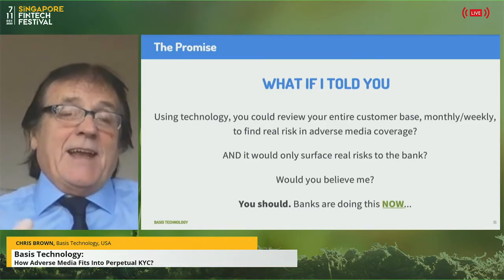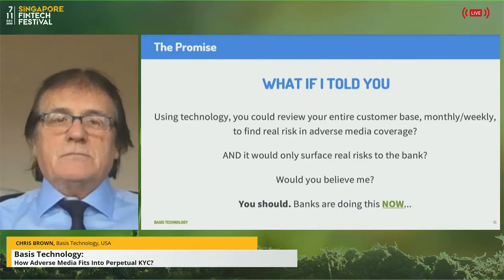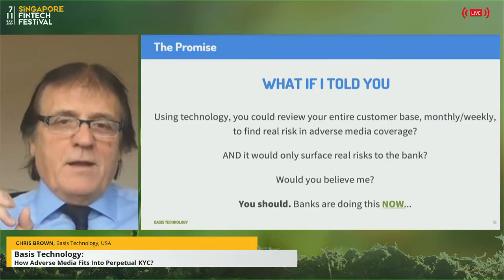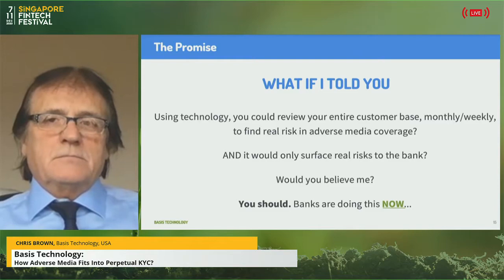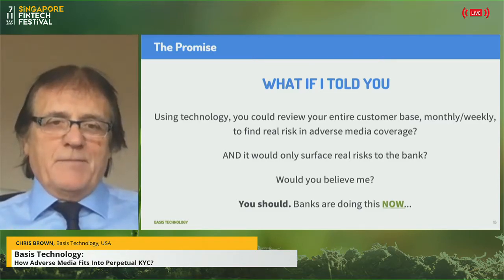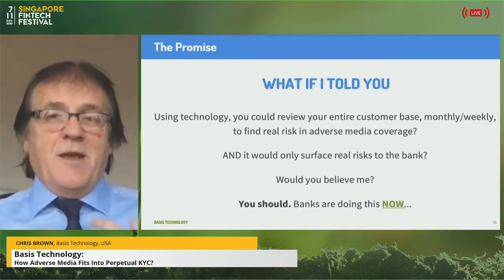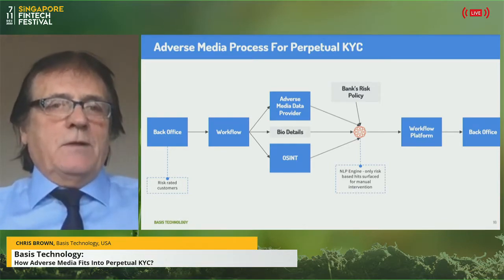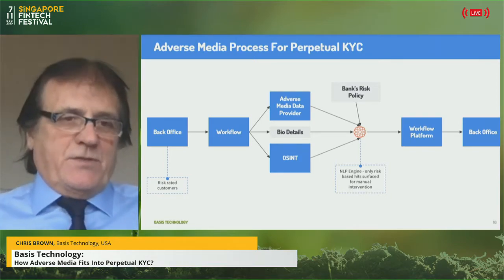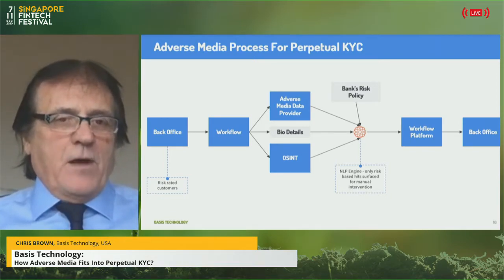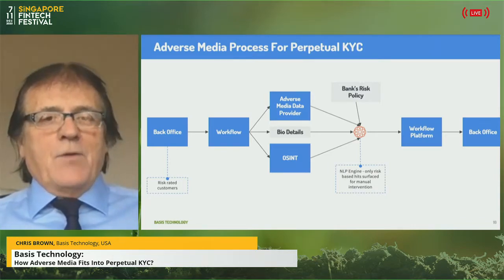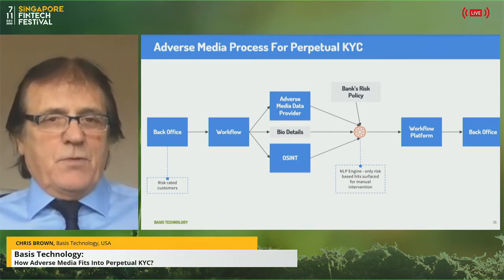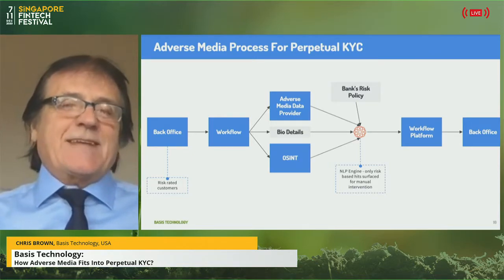What if I told you that using technology you can review your entire customer base monthly, weekly, or even daily — to find real risk in adverse media coverage — and it would only surface real risk relevant to the bank? Banks are doing this now, not just with us but with many organisations. Here's an example of what I call a perpetual workflow process: your normal back office is linked to high-risk flags, then goes through a workflow incorporating adverse media data providers and biometrics data.